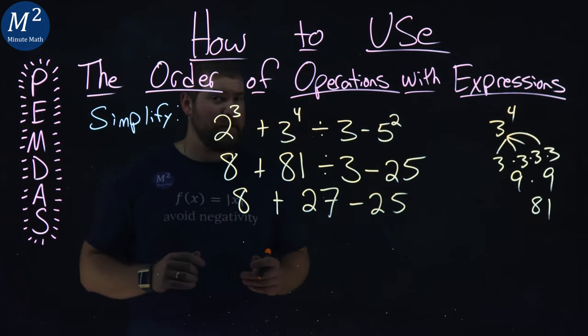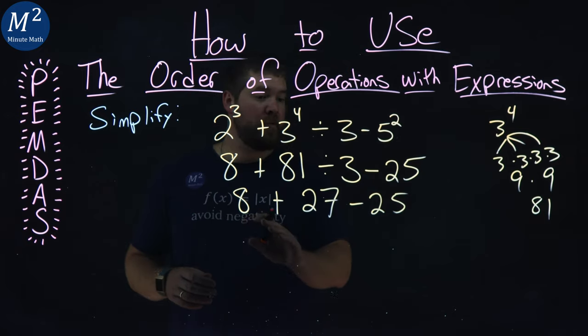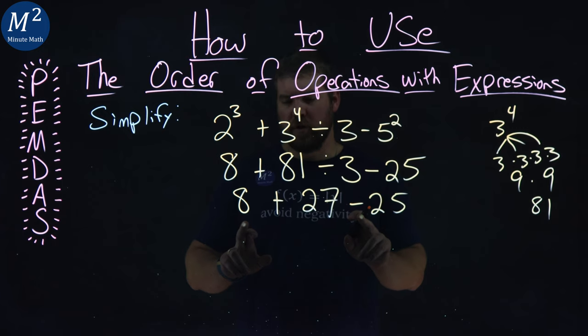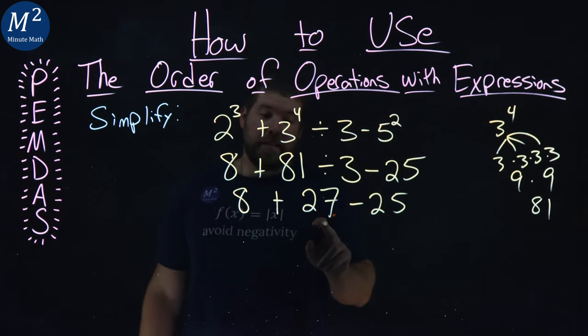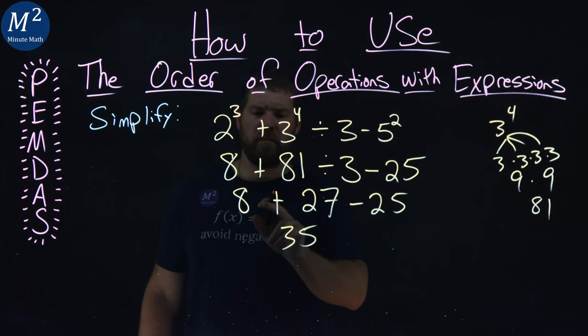Addition and subtraction are in the same class, and so we go read left to right. We have addition and subtraction. Addition, let's go first here. 8 plus a 27. Oh, what does that come out to be? Is that 35? Right? 3 from 8 gives you 35.